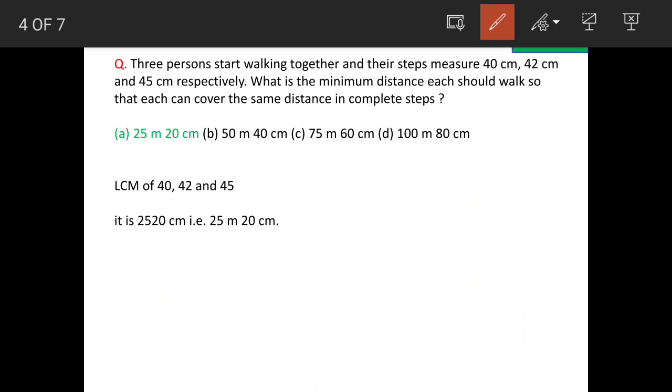Now, this 2520 is in centimeters. We have to convert this into meters because options are in meters. So, 2520 divided by 100 is equal to 25.20 meters.